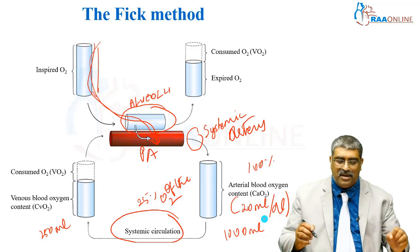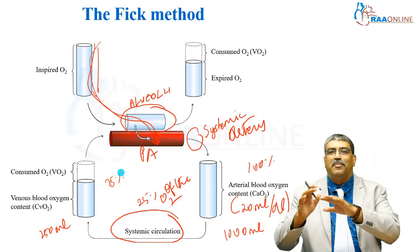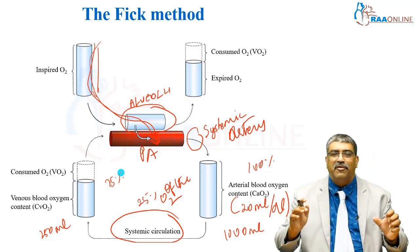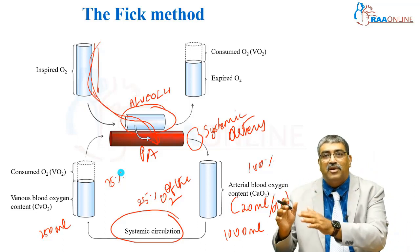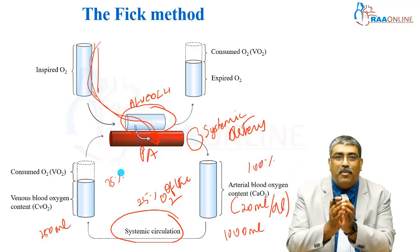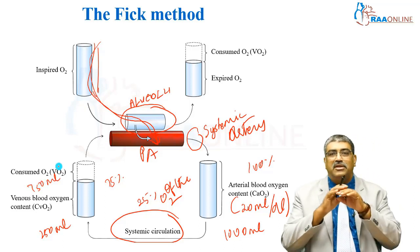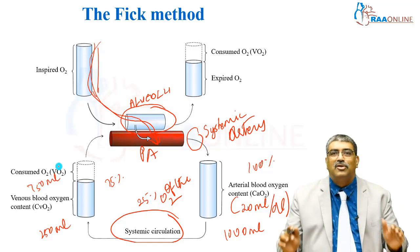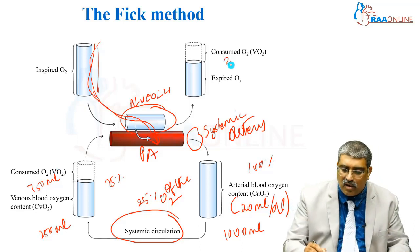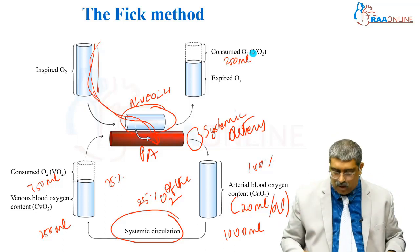What happens on the venous side? The venous side saturation is around 75%, because from 100%, 25% is extracted, leaving 75%. Put in other words, out of 1000 ml which is delivered, 250 ml of oxygen is being utilized. So there will be 750 ml of oxygen which is available. Depending upon this consumed oxygen, which is around 250 ml, you calculate the cardiac output.